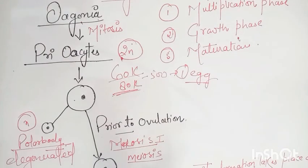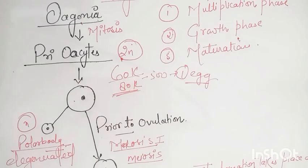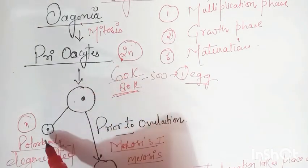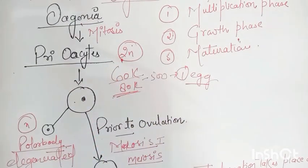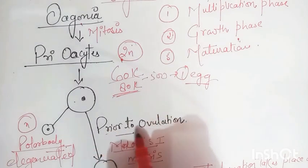The primary follicles in Graafian follicles work on egg formation and the oogenesis is in diplotene stage. After puberty, this process continues. Primary oocyte forms a polar body and the first meiosis is prior to ovulation.